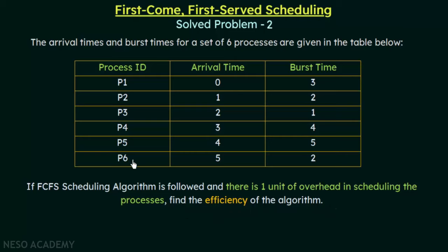For this set of 6 processes with the given arrival and burst times, following FCFS with one unit of overhead, we have to find the efficiency. Before we proceed, let us understand what 'one unit of overhead in scheduling the processes' means. We already know how FCFS works — the process that comes first is given the CPU first. By one unit of overhead, we mean that when a process arrives in the ready queue and is to be given the CPU, the CPU cannot be given at that exact instant. The system has a slight delay of one unit before it assigns the CPU to each process.